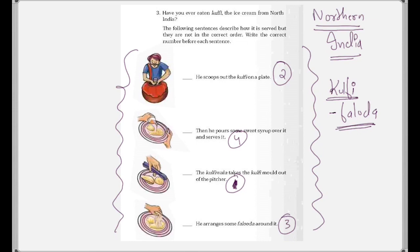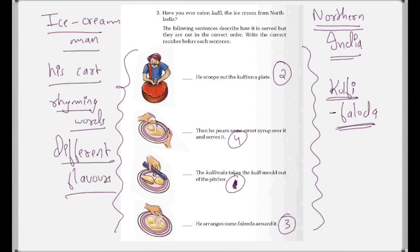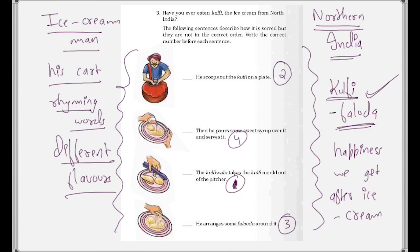With this we have come to the end of the chapter. In this chapter we read about the ice cream man, his cart, rhyming words, different flavors, the happiness we get after eating ice cream, and also about kulfi faluda. I hope the poem is clear to you. If you have any doubts you can ask me in the comment section. If you like the video please give it a thumbs up and subscribe to our channel. We'll study the next chapter in the next video. Thank you.